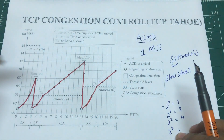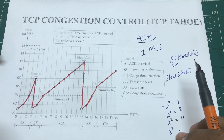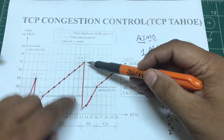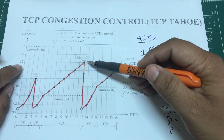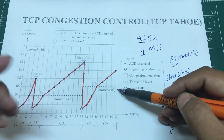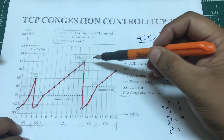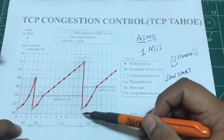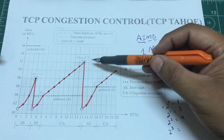In TCP Tahoe, this continues until, let's say, you receive three duplicate ACKs. TCP Tahoe treats timeout and triple duplicate ACKs the same way. Wherever you were when you receive three duplicate ACKs — say your congestion window was 12 — it makes that window half, setting your new ssthresh to six. Then it brings your MSS down and starts off from one MSS again. This is the multiplicative decrease.